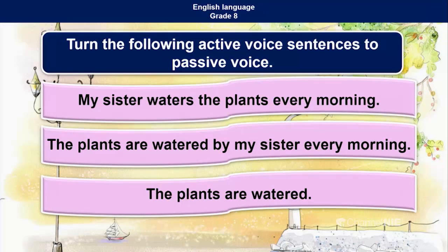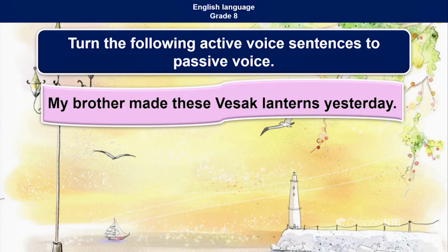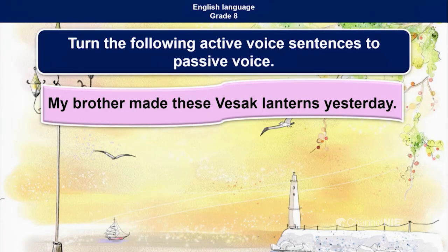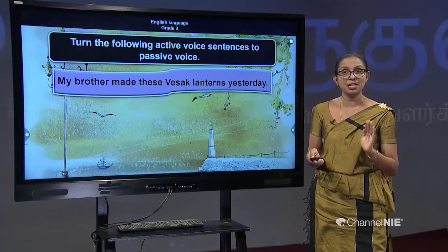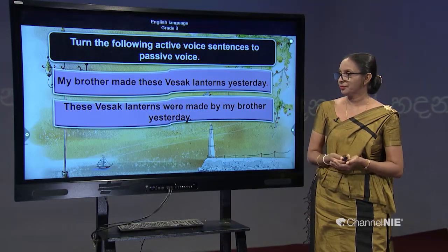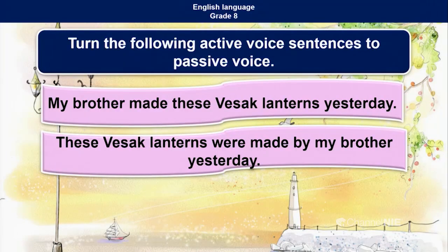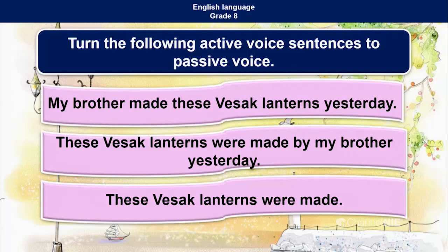Fourth: my brother made these Vesak lanterns yesterday. 'Made' indicates past tense. These Vesak lanterns is plural, so we use 'were'. With agent: these Vesak lanterns were made by my brother yesterday. Without agent: these Vesak lanterns were made — without mentioning when and by whom.